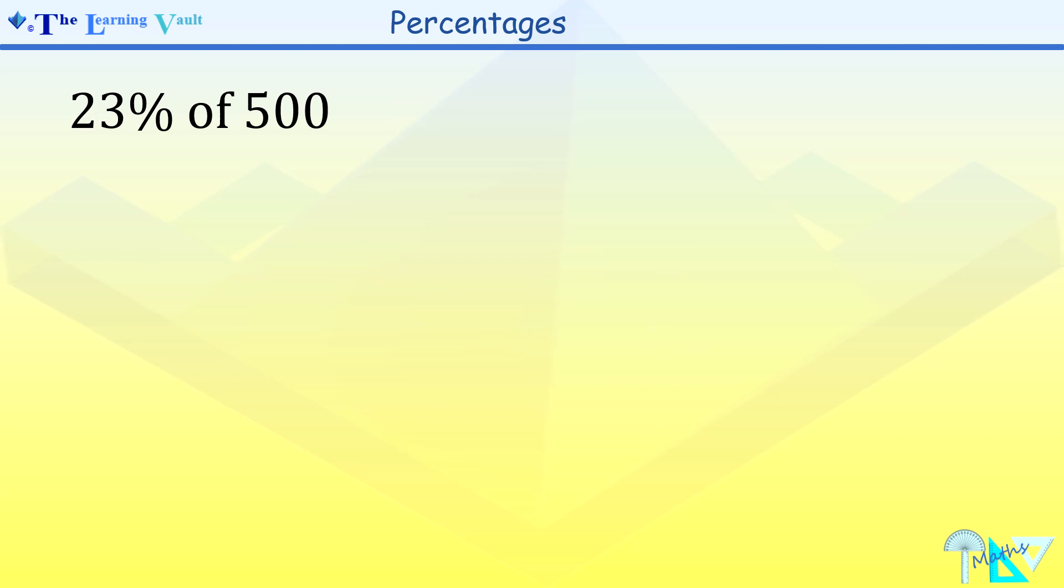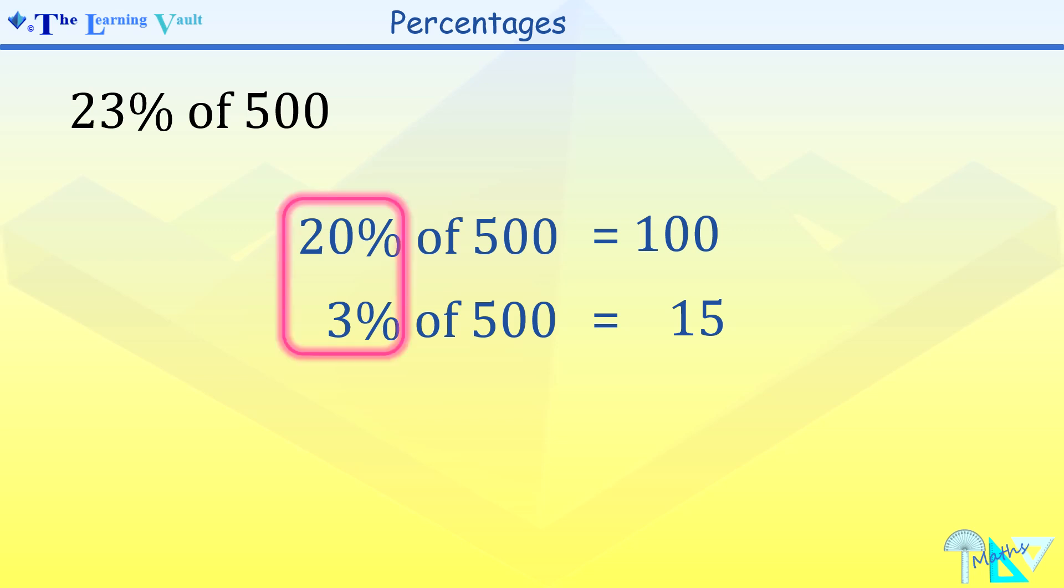Now in finding 23% of 500, based on our previous calculations, let's have a look. So 20% of 500 was 100, and 3% of 500 is 15. Now remember, 20% plus 3% gives you your 23%. Therefore, 100 plus 15 will give us 115. So in conclusion, 23% of 500 equals 115.